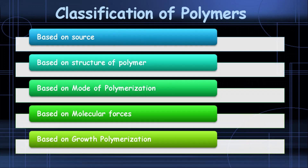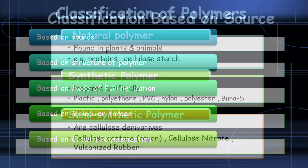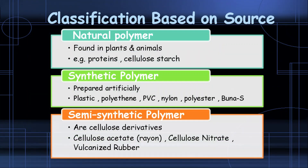Polymers are classified based on source, structure, mode of polymerization, molecular forces, and growth polymerization. Based on source, they are divided into three categories: natural polymers, synthetic polymers, and semi-synthetic polymers. Natural polymers are found in animals, and you can similarly read about the synthetic and semi-synthetic polymer examples.